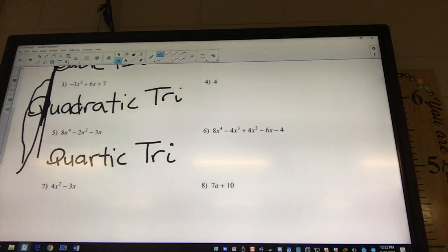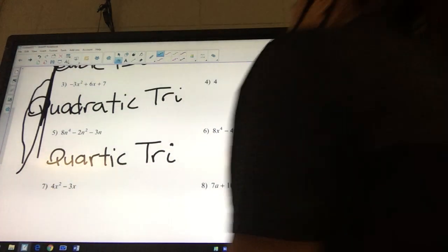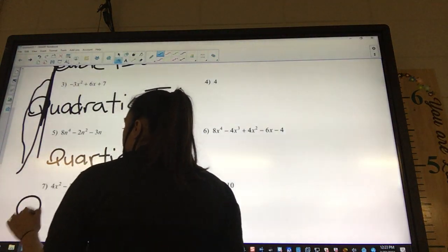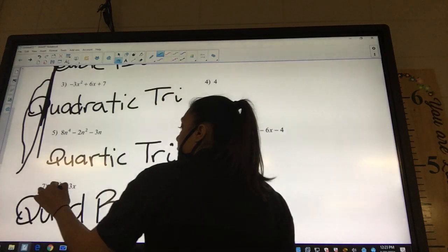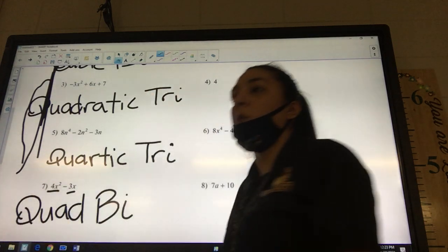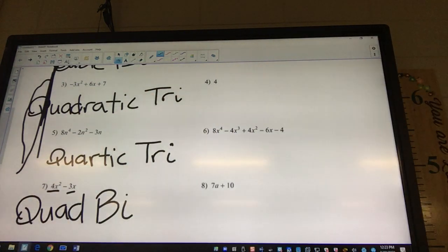Okay, look at seven. What's the highest exponent? So it would be quadratic. Quadratic. And how many pieces? Two would be binomial. Yep, and there's two pieces. One, two. So it's going to be a binomial.